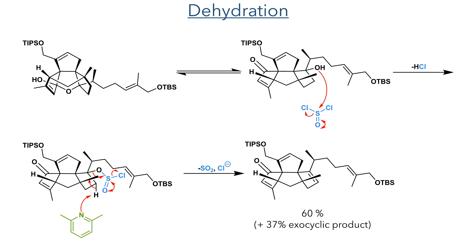Taking this forward, a dehydration reaction was then carried out using thionyl chloride. The hemiacetal is in equilibrium with the ketohydroxyl compound, and the hydroxyl group can attack thionyl chloride, eliminating an equivalent of HCl. This activates it as a leaving group, and a hydrogen atom on the adjacent carbon can be deprotonated with lutidine. This eliminates sulfur dioxide and chloride, forming the target alkene in a 60% yield, along with a 37% yield of the exocyclic product.